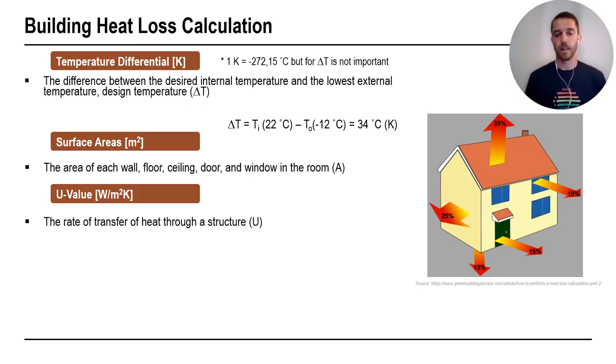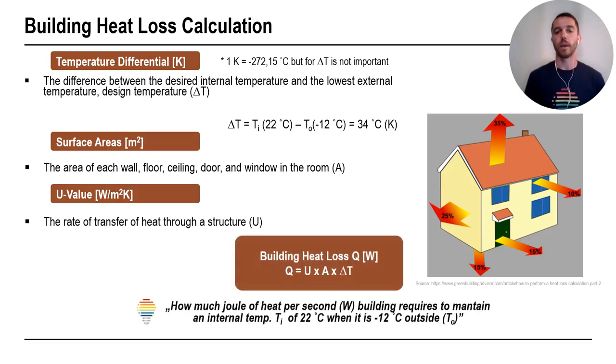And when we put everything together, we have building heat loss, Q in watts. So building heat loss is U multiplied with A multiplied with delta T. Or, in easy and understandable way, this is how much joule of heat per second. So this is what building requires to maintain an internal temperature, for example, 22 degrees when it's minus 12 degrees outside. So we need to know that this is speed. So heat is speed, how much joule of heat per second. And on later slide, we will go more deep inside.